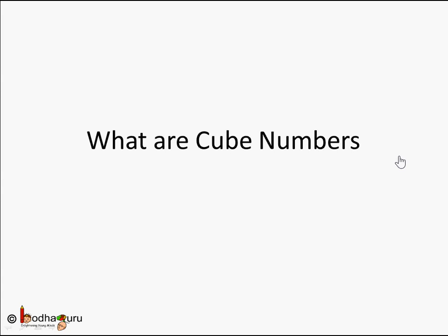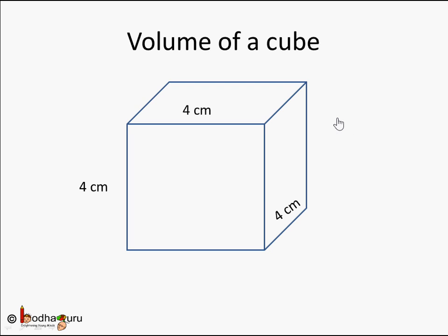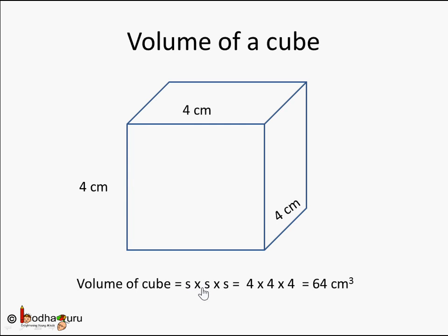Good morning children. In this video we are going to learn what are cube numbers. Let's start with a cube — we know a cube is a three-dimensional shape where length, breadth, and height are all the same. Here is an example cube with length, breadth, and height as 4 centimeters. As we have learned in our geometry chapter, the volume of a cube is side × side × side.